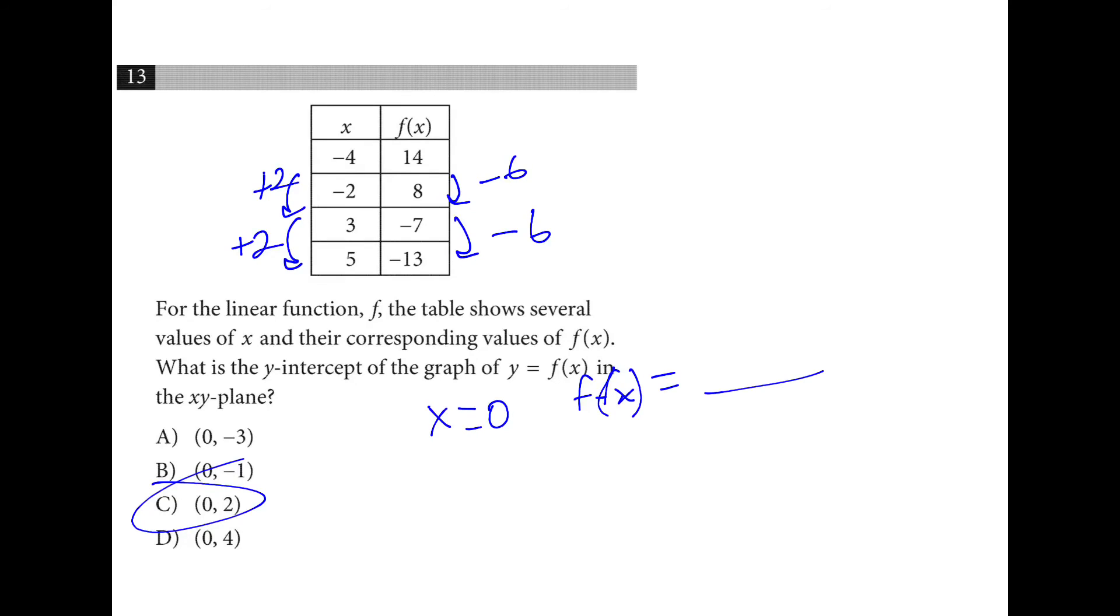Alternatively, I could pick one of these coordinates and since I know my slope is negative 3, I could take 8 is equal to negative 2 times negative 3 plus b, or 8 is equal to 6 plus b, or 2 is equal to b. Both of those methods will work.